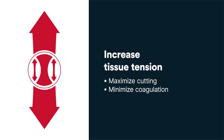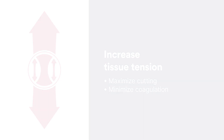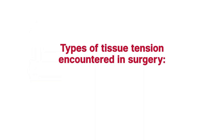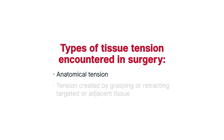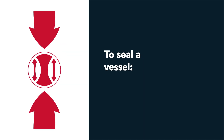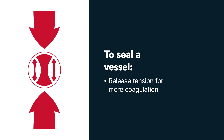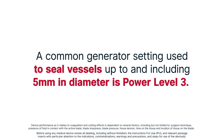Tissue tension. Like blade pressure, adding tension to the tissue maximizes cutting and minimizes coagulation. There are generally two types of tension encountered in surgery: anatomical tension, and tension created by grasping or retracting targeted or adjacent tissue. To seal a vessel, it is recommended to release tension on the tissue to allow for more coagulation, as well as use a lower power setting. A common generator setting used to seal vessels up to and including 5 millimeters in diameter is power level 3.